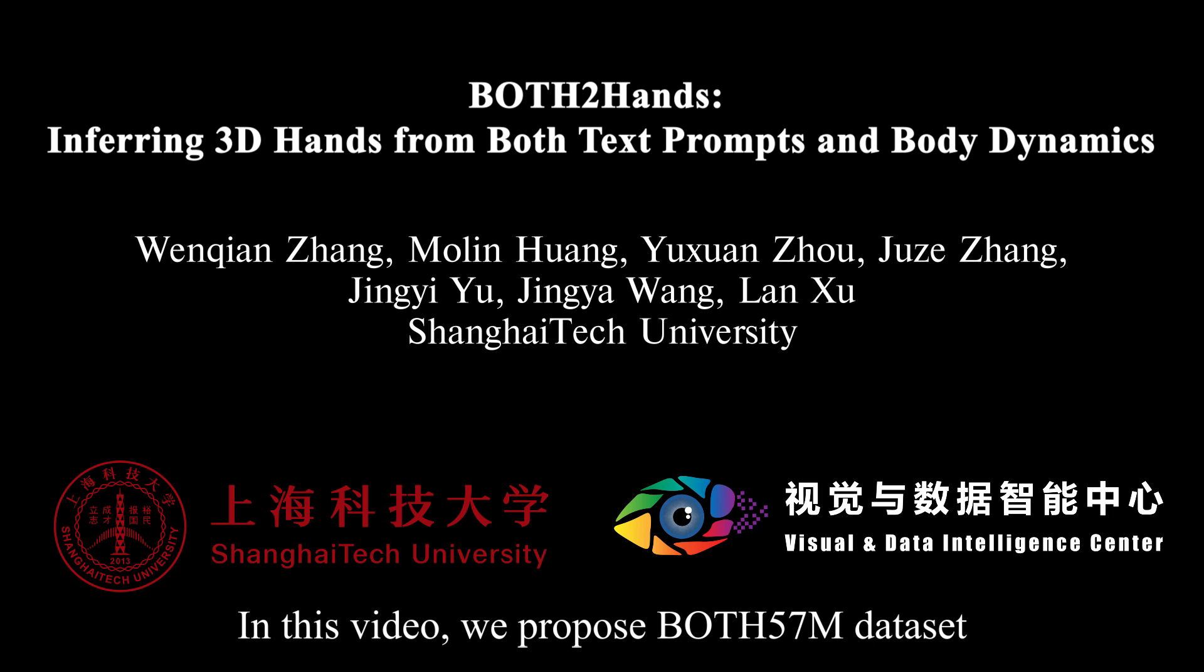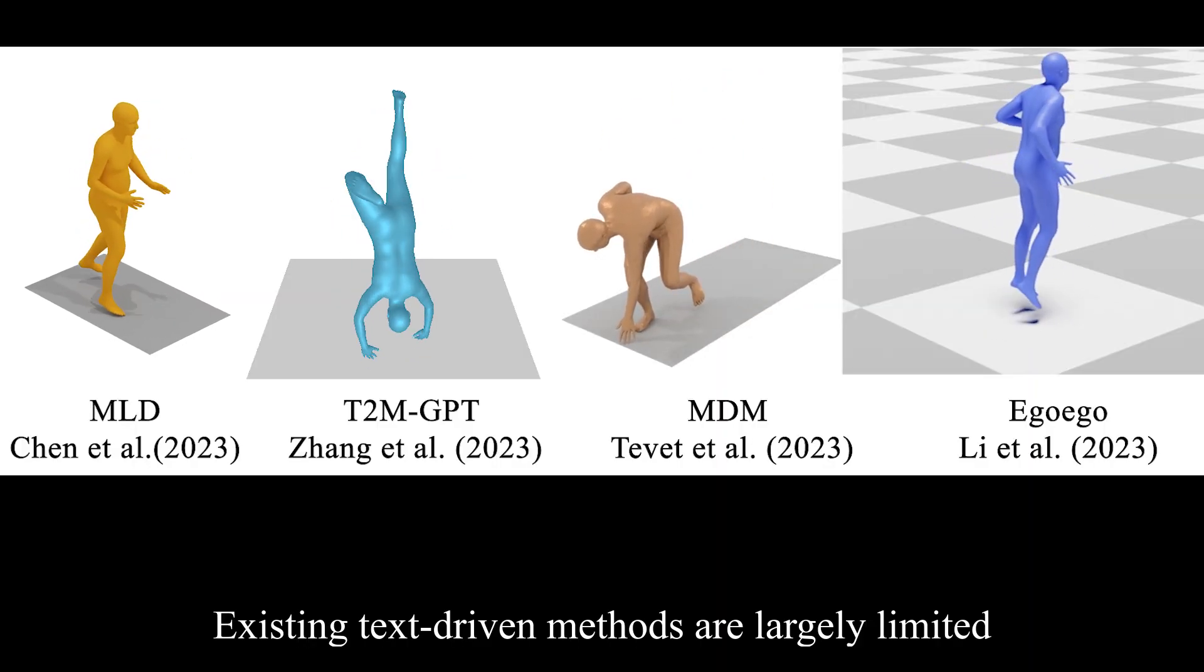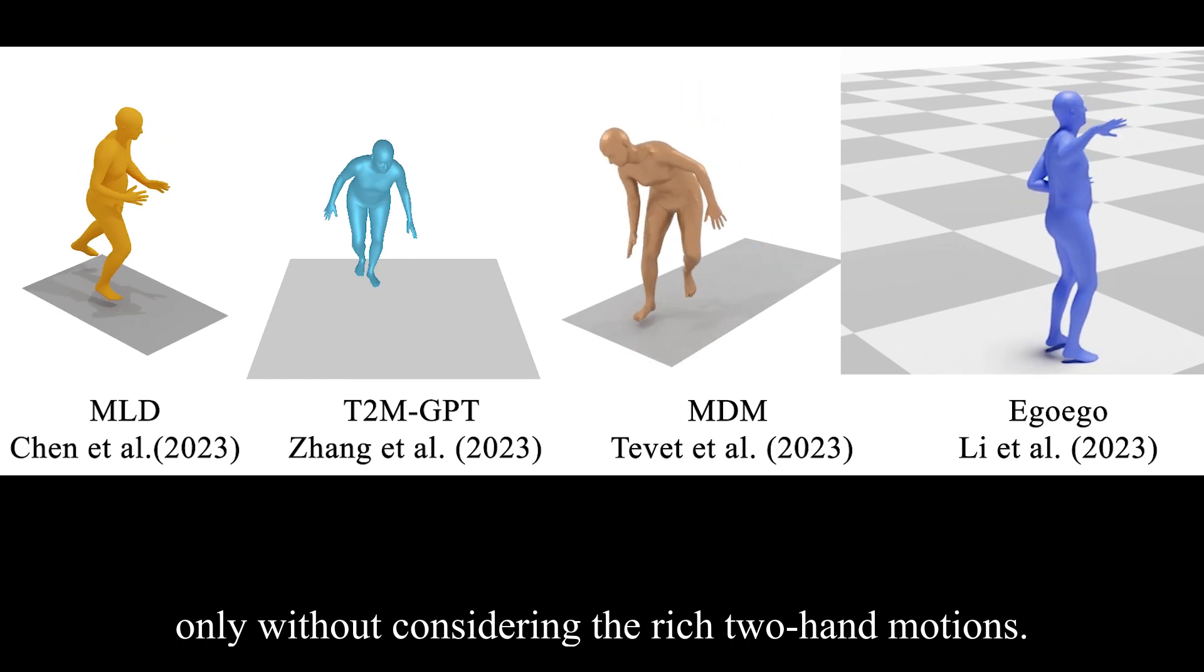In this video we propose BOTH 57M dataset and BOTH Two Hands algorithm. Existing text-driven methods are largely limited to generating body motions only without considering the rich two-hand motions.